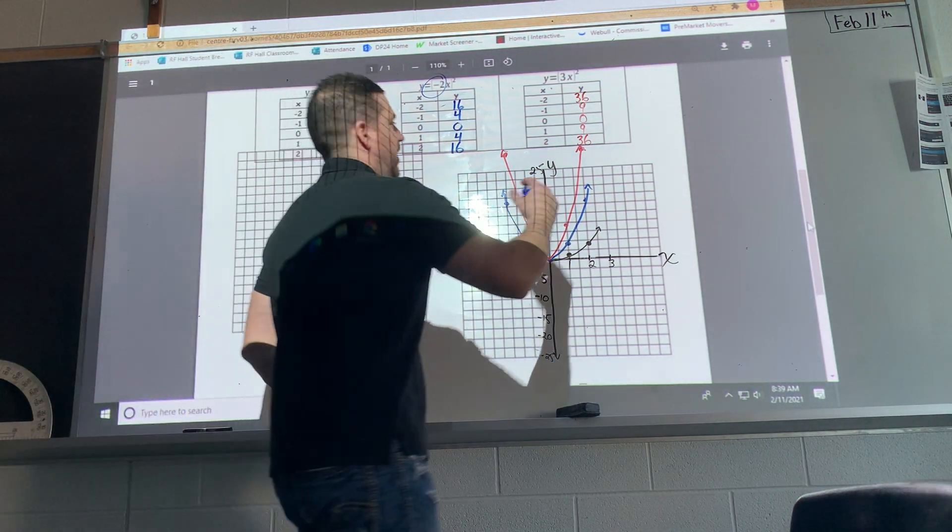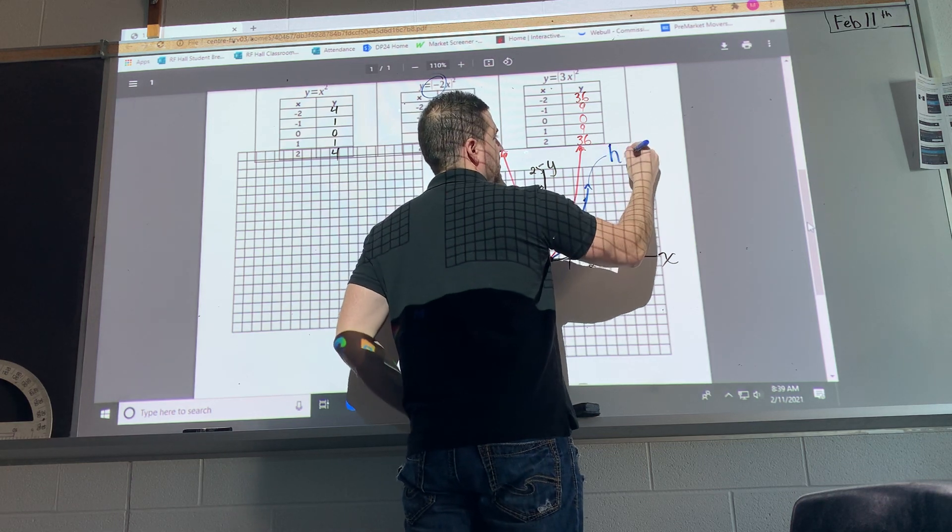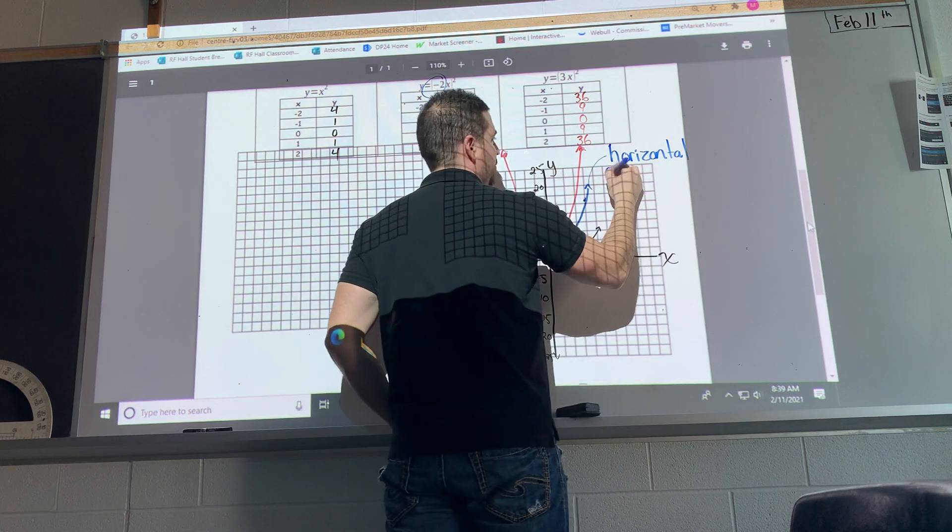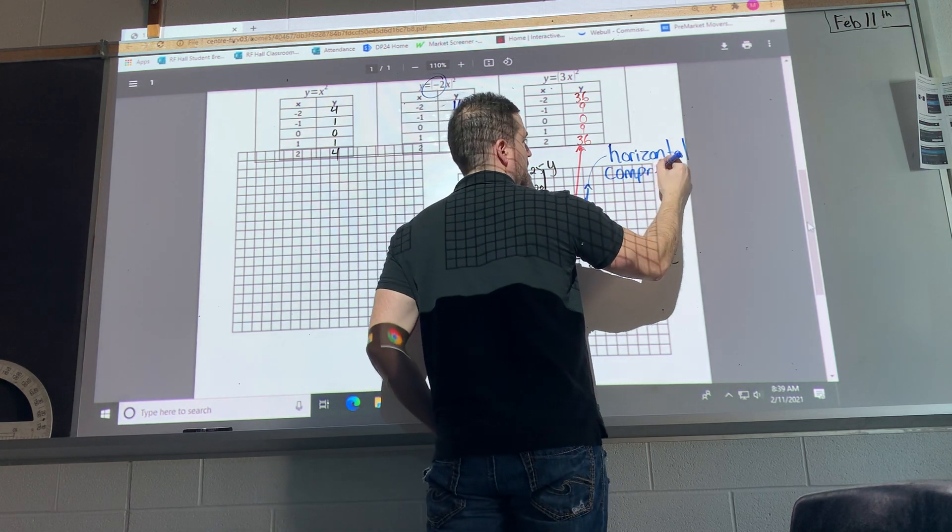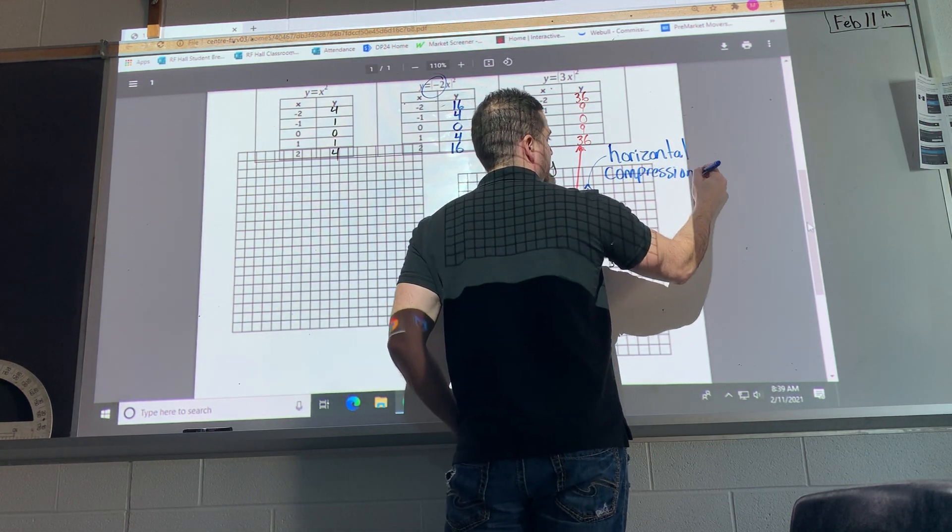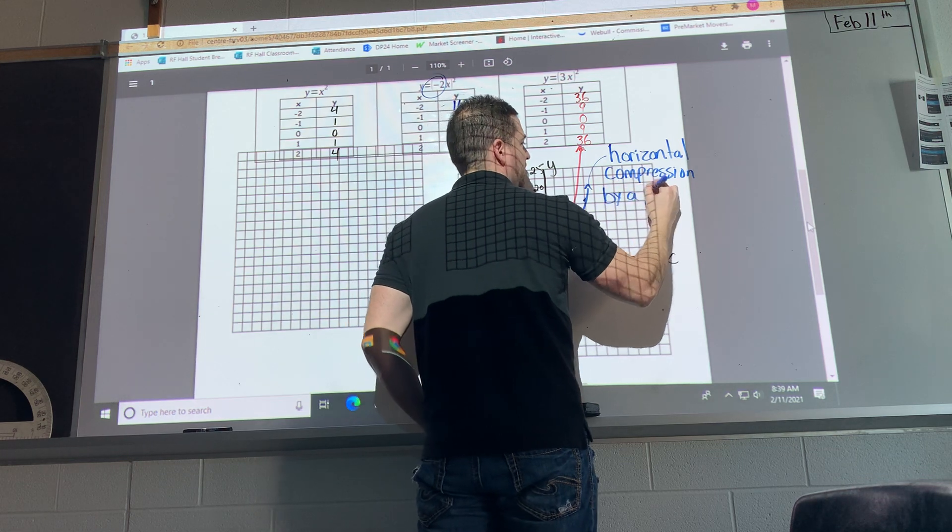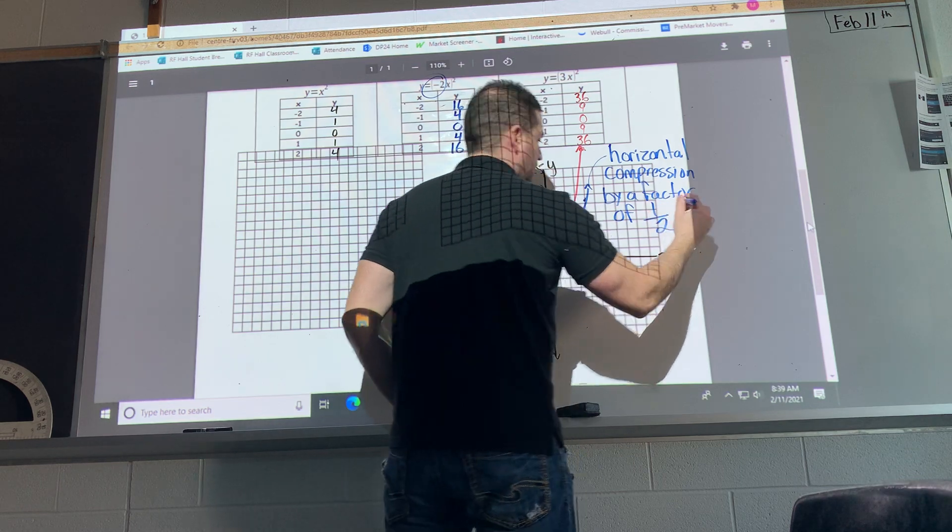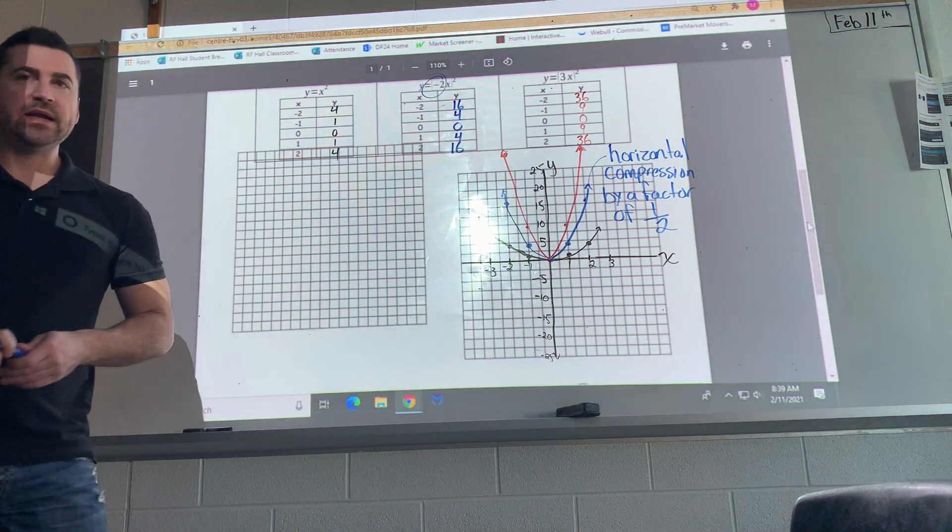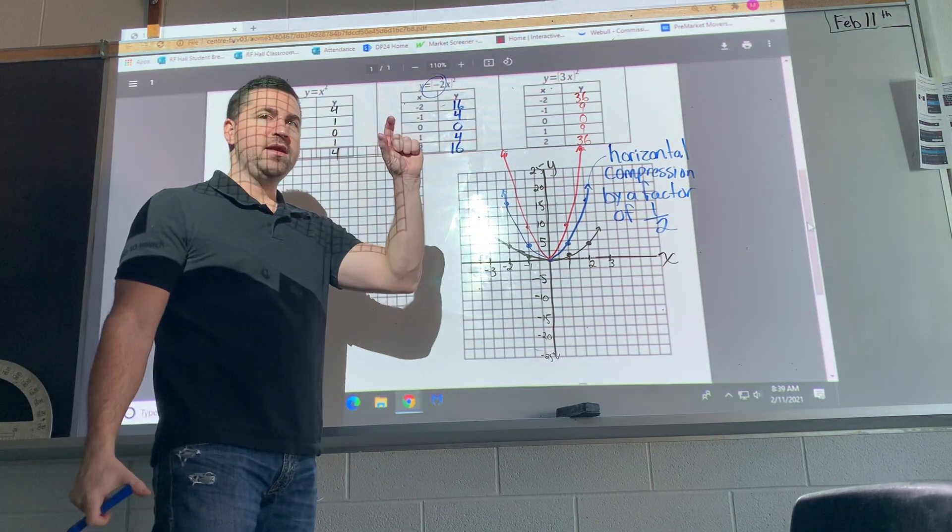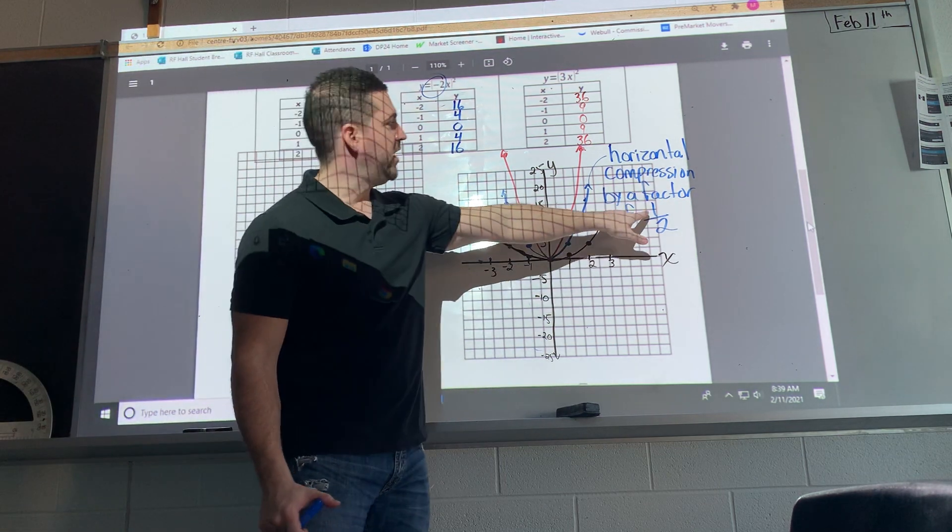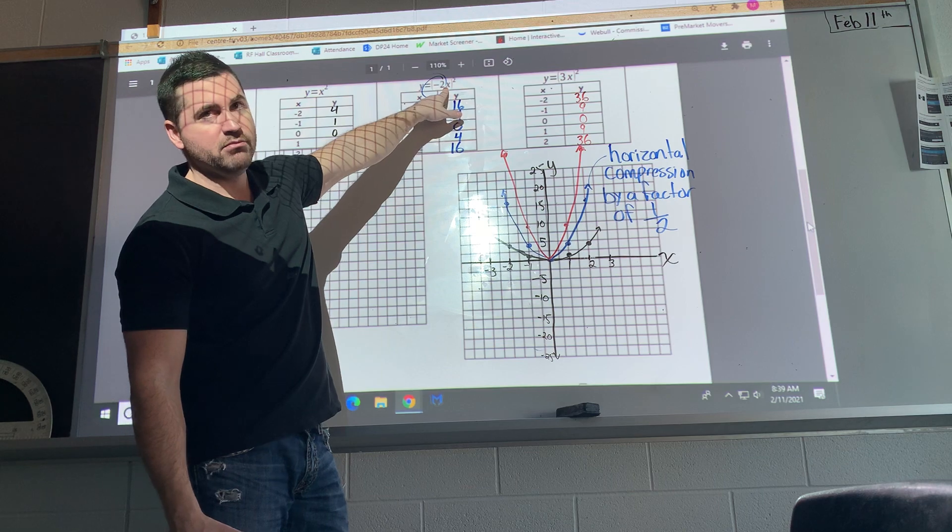So the blue one was a horizontal compression by a factor of 1 over 2. So when we're talking about the k value, it's always 1 divided by k. So it was 1 divided by the actual number, 2.